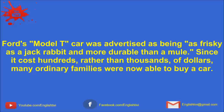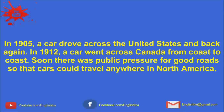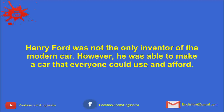Ford's Model T car was advertised as being as frisky as a jackrabbit and more durable than a mule. Since it cost hundreds rather than thousands of dollars, many ordinary families were now able to buy a car. Once many people had cars, their habits began to change. People didn't have to live next to the factories or offices that they worked in. Going for Sunday drives or traveling to tourist sites became a common thing. In 1905, a car drove across the United States and back again. In 1912, a car went across Canada from coast to coast. Soon, there was public pressure for good roads so that cars could travel anywhere in North America. Henry Ford was not the only inventor of the modern car. However, he was able to make a car that everyone could use and afford.